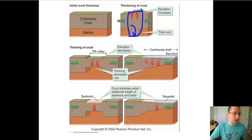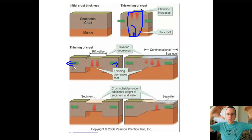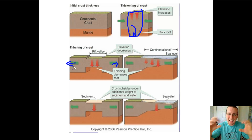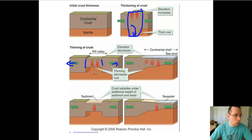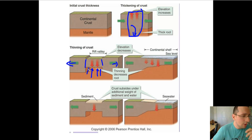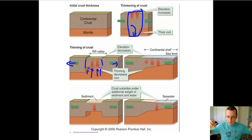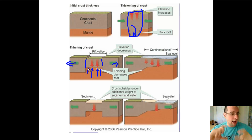If you thin out the crust — as happens when a rift valley is forming and tension is stretching it — the crust becomes slightly less dense in the middle region. Since it becomes less dense, the crust will become uplifted, and the roots will thin out because you're floating higher as density decreases. So when the crust thins down, the roots uplift up; when the crust uplifts, the roots subside down. Whatever is happening to the top will happen to the bottom as well — that's what isostatic adjustment is all about.